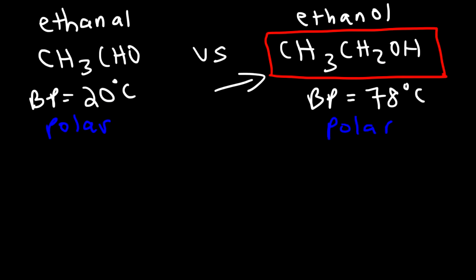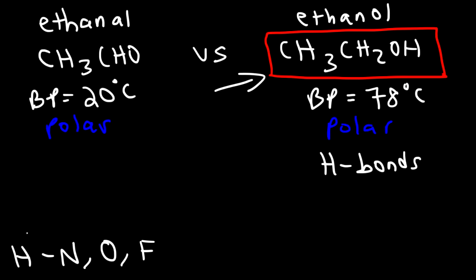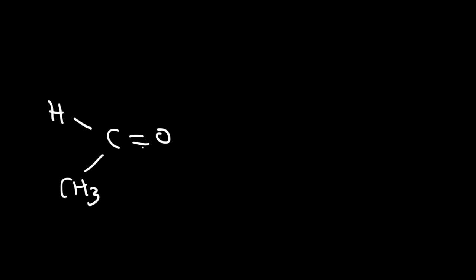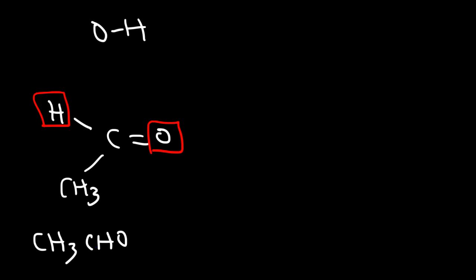They both contain dipole-dipole interactions. Ethanol, however, contains a special type of dipole-dipole interaction known as hydrogen bonds. Whenever hydrogen is directly attached to nitrogen, oxygen, or fluorine, you're going to have hydrogen bonds. A hydrogen bond is a stronger type of intermolecular force than a regular dipole-dipole interaction, and that's why ethanol has a higher boiling point than acetaldehyde. If you draw acetaldehyde, you can see that the oxygen is not directly attached to the hydrogen — that's why there are no hydrogen bonds in acetaldehyde.